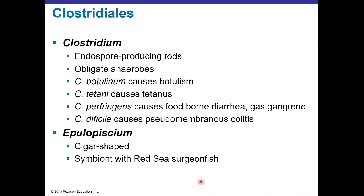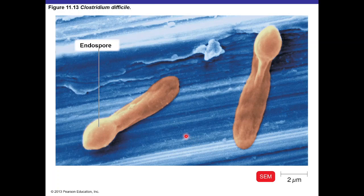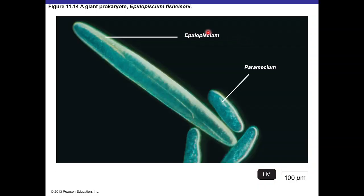Clostridium difficile is part of the normal intestinal flora and can overgrow after someone receives 7- or 14-day antibiotic treatment in a hospital. Epulopiscium is a cigar-shaped gigantic bacterium that lives in symbiosis with the Red Sea surgeonfish. Clostridium difficile with terminal endospores is shown, along with Epulopiscium, which is about six times larger than Paramecium — a large protozoan.